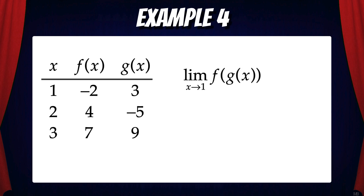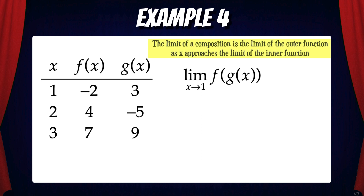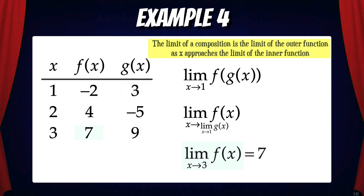Now let's try a limit of a composition: the limit of f(g(x)) as x approaches 1. The limit of a composition is the limit of the outer function as x approaches the limit of the inner function. So let's first find the limit of g(x) as x approaches 1, and that value is 3. Then we find the limit of f(x) as x approaches 3, which is 7. And that's our solution.